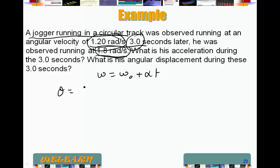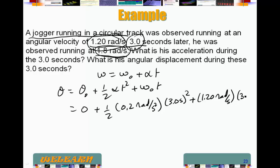Omega is omega naught plus 1/2 of alpha t squared plus omega 0 t. So in this case, it's going to be 0 plus 1/2 of 0.2 radians per second squared times 3 seconds squared plus 1.2 radians per second times 3 seconds.